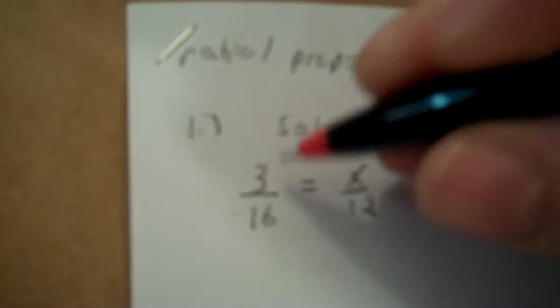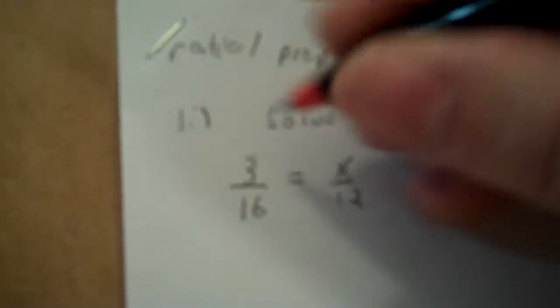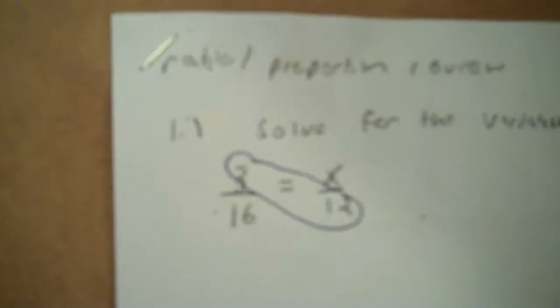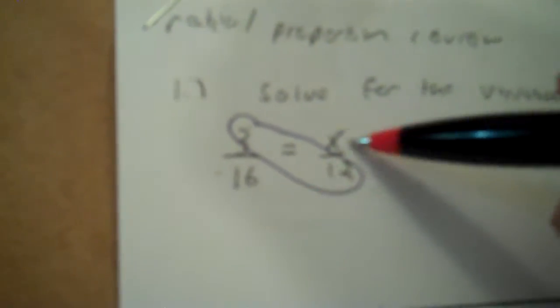Well, 3 times 12 is going to be equal to 16 times x. So I'm going to multiply the two known factors. You just cross multiply and divide. So you take 3 times 12, and then whatever that is, since that's equal to 16 times x, you can just divide that by 16.